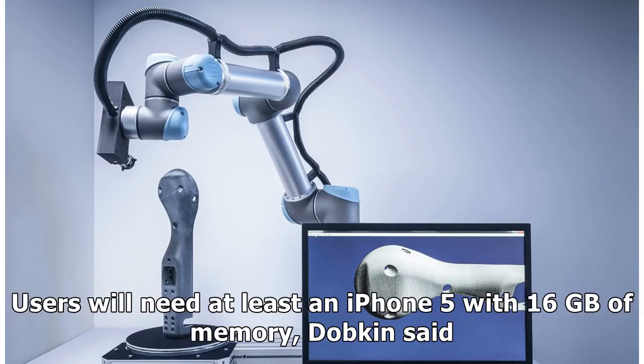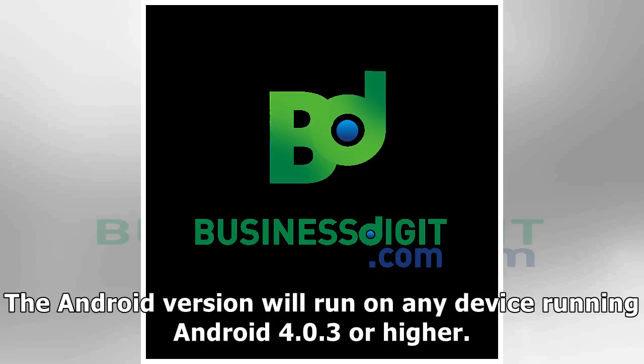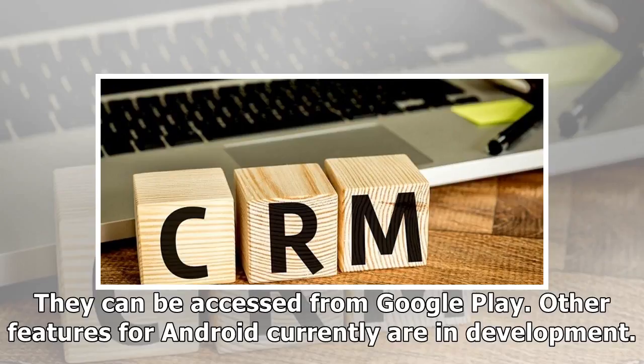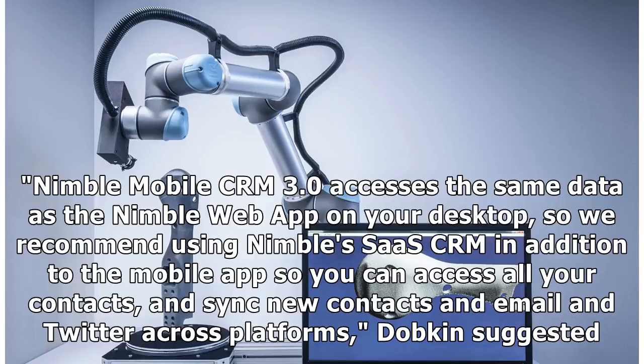Users will need at least an iPhone 5 with 16 gigabytes of memory. The Android version will run on any device running Android 4.0.3 or higher. Some mobile features, including multiple deal pipelines and smart calendars, are already available on Android and can be accessed from Google Play. Other features for Android are currently in development.